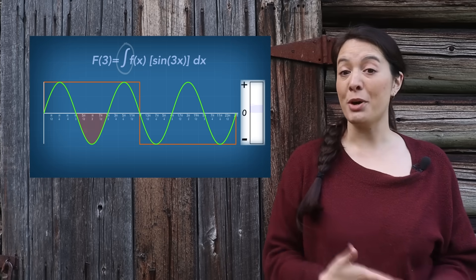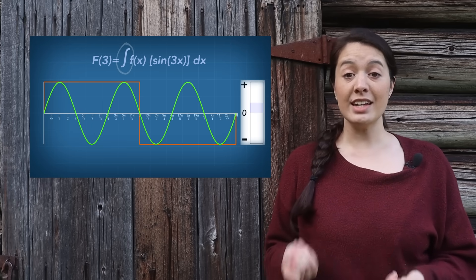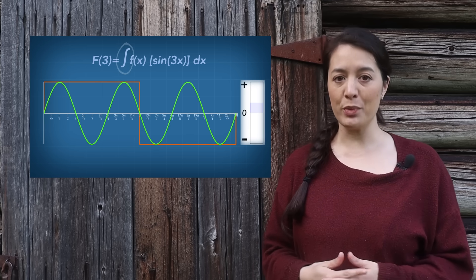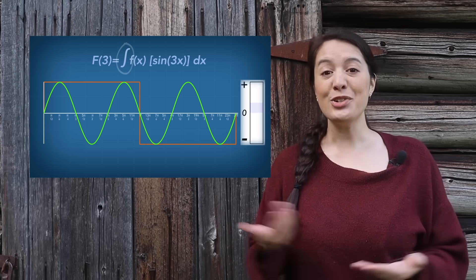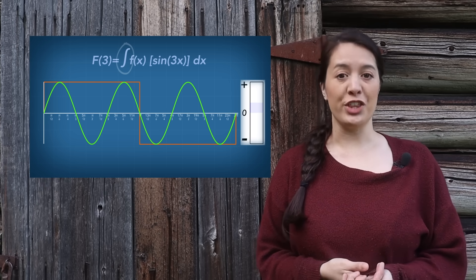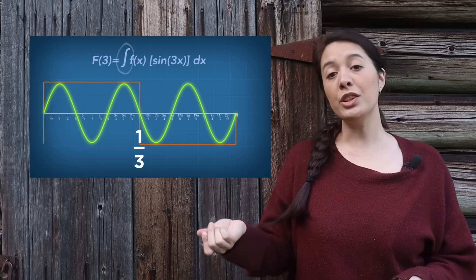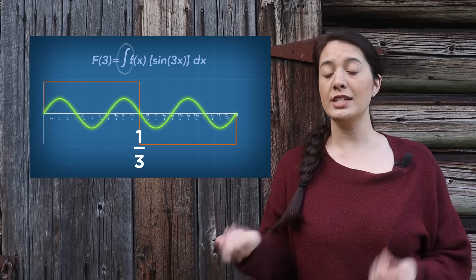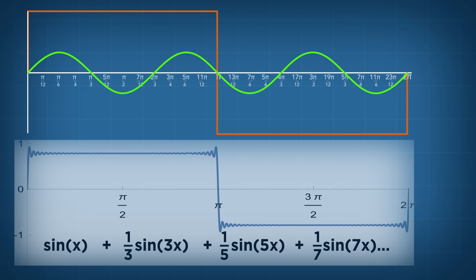It turns out that the sum is positive, so sine 3x does indeed go into the making of this square wave, but how much of it? After normalization, we get a value of one-third. This tells us that only one-third of the amplitude of sine 3x is used to make the square wave, and when we compare with our earlier example, we do indeed see the term one-third sine 3x.